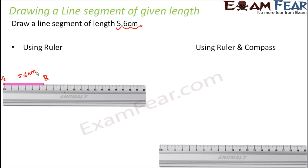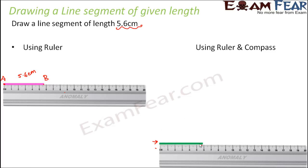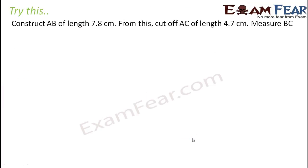The other option is to use a ruler and a compass — the compass helps ensure the length you are measuring is accurate. You place the ruler and then position the compass just above it such that the pointed tip is at zero and the pencil tip is at 5.6. You make an arc at 5.6, then join the two points to get a line segment of 5.6 centimeters. Both methods give the same result.